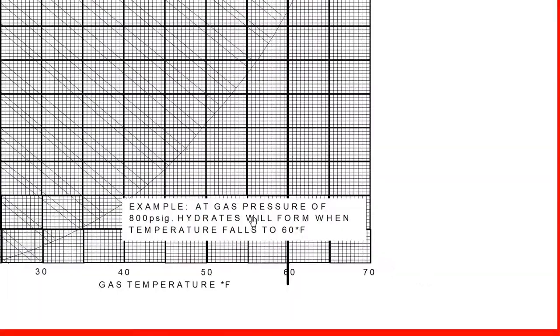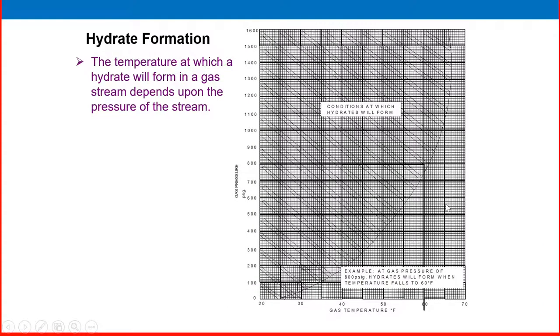Hydrate formation: There is another graph we have to discuss for better understanding of hydrate formation. First, the temperature at which a hydrate will form in a gas stream depends upon the pressure of the stream. This is the gas temperature here and gas pressure is here. What is the example telling? At a gas pressure of 800 psi, hydrate will form when the temperature falls to 60 degrees Fahrenheit. So we will check that. See, it is 60 degrees Fahrenheit. This gas pressure is 800 psi. This is the line coming here and 60 degrees Fahrenheit here. Beyond this point, this inclined line and this area is the condition at which hydrate will form.